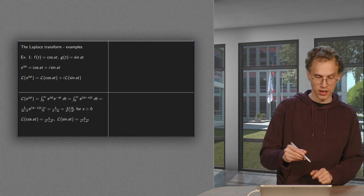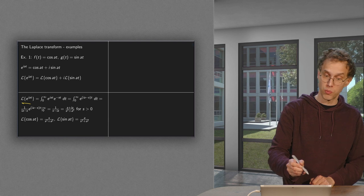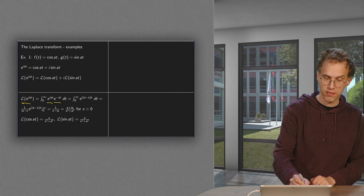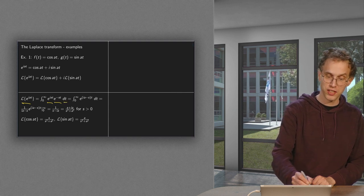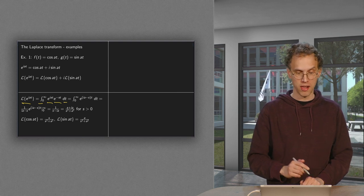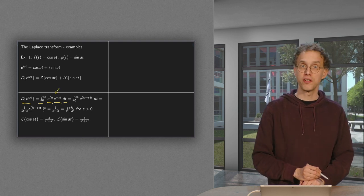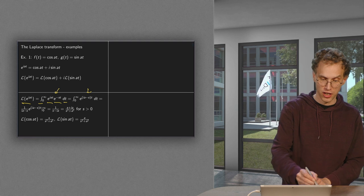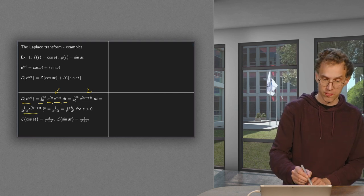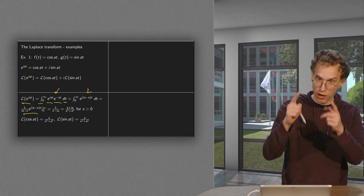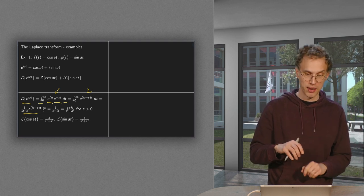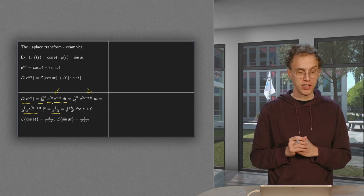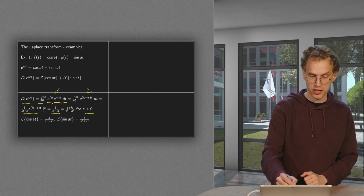So we compute the Laplace transform of e^(iat). We put f here, multiply with e to the power minus s·t, and integrate with respect to t from 0 to infinity. First we rewrite the exponent as (ia − s). Then we can find an antiderivative straightaway. We plug in the boundaries: the lower boundary gives us 1 over (s − ia), and for the upper boundary we get 0, provided we pick s positive.